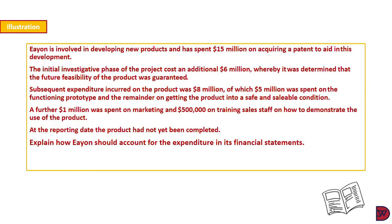So Ian is involved in developing new products and has spent $15 million on acquiring the patent to aid in this development. The initial investigative phase of the project cost an additional $6 million, whereby it was determined that the future feasibility of the product would be guaranteed. Subsequent expenditure incurred on the product was $8 million, of which $5 million was spent on functioning prototype, and the remainder on getting the product into a safe and sellable condition. A further $1 million was spent on marketing and $500,000 on training sales staff on how to demonstrate the use of the product. At the end of the reporting date, the product had not yet been completed. Explain how Ian should account for the expenditure in its financial statements.